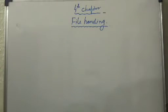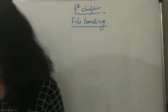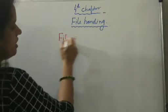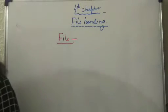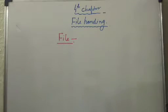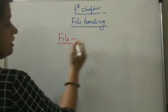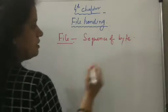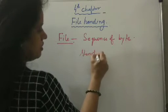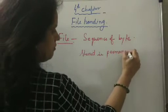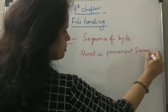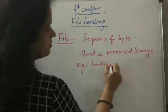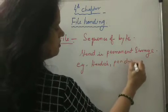First of all, let us see what is meant by a file. You may define a file as: File is a sequence of bytes on disk, which is where it is stored permanently — in permanent storage. Examples include hard disk, pen drive, etc.